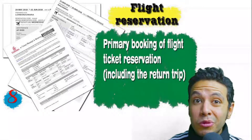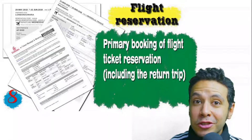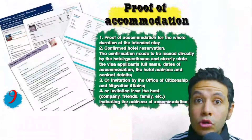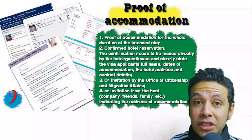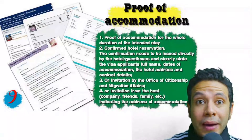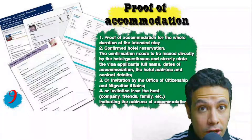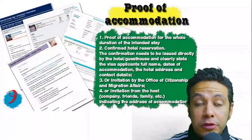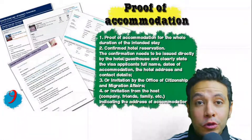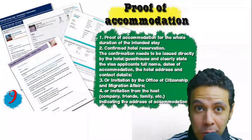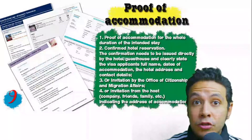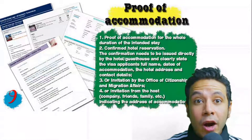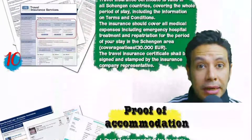You should also provide a flight reservation — it can be an initial booking, though in some cases a confirmed booking is needed. This flight reservation must include a return ticket. You will also need to provide proof of accommodation: a confirmed hotel reservation, an invitation from a host, or an invitation from an organization you are visiting. For a hotel or hostel, an initial booking is acceptable, but the name, address, and contact number of your hotel must be mentioned.